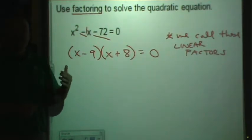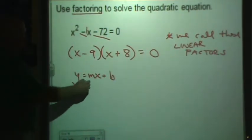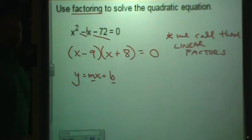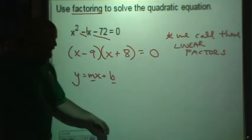When you think about y equals mx plus b, when you think about the linear equation, the slope-intercept form of a line, you have a slope and you have a y-intercept. So technically, each one of these has its own individual slope and its own individual y-intercept. So that's why we call them linear factors.